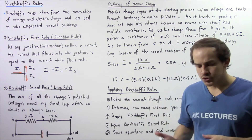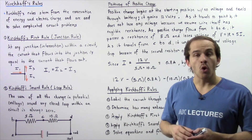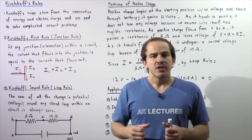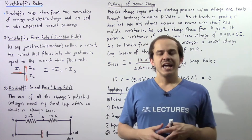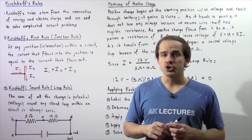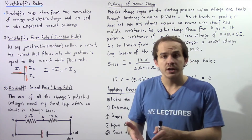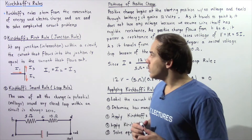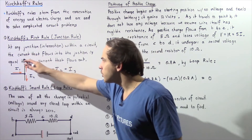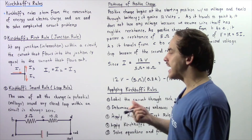Let's begin with Kirchhoff's first rule, also known as the junction rule. At any given junction or intersection within an electric circuit, the quantity of electric charge that flows into that particular junction is equal to the quantity of electric charge that comes out of that same junction. That stems from the fact that electric charge is not consumed or destroyed within that junction. So at any junction, the current that flows in is equal to the current that flows out.